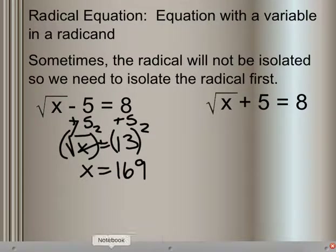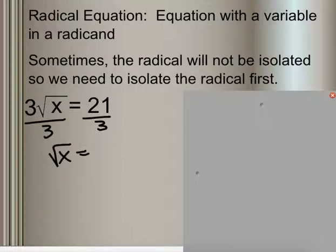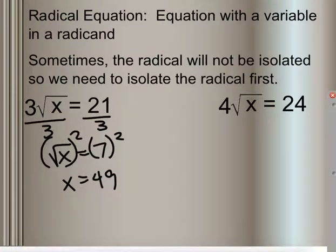Same with that one on the right. We can say I'm going to subtract 5 from each side and square it to get x is equal to 9. And sometimes, we have to not just add or subtract to get the radical alone — we have to divide or multiply. In this case, we need to divide and get the square root of x is equal to 7. So we square each side and get x is equal to 49. You can try this one on the right side of the page as well.